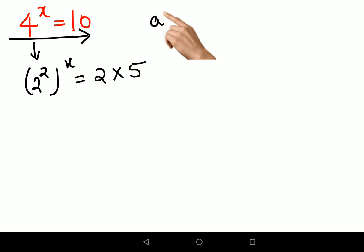Now understand, the law of indices says a raised to m, the whole raised to n, will be equal to a raised to m into n. So this is now becoming 2 raised to 2x equals to 2 into 5.